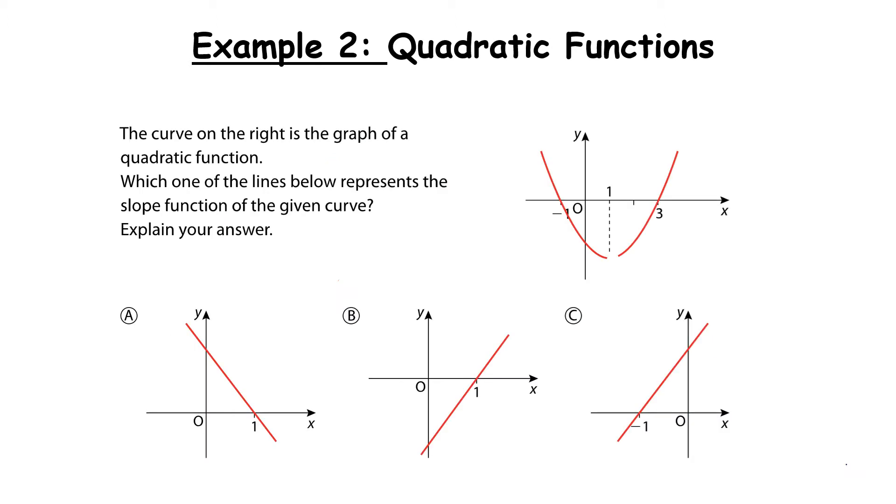Example 2, a quadratic function. So here we have a curve, and it's a parabola. It is a positive quadratic. We can see from the graph that it will have two roots, one at minus 1 and one at 3. We are given this dotted line here at 1, and that is actually its axis of symmetry. That line is a vertical line. It is also a constant. It is x equals 1. It doesn't matter what y value you take. If you pick any point on that line, the x value will be 1.